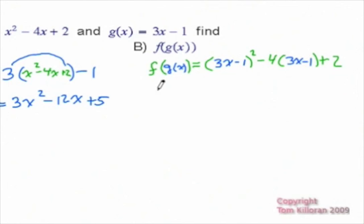And then just simplify. So we have here f of g of x is equal to 9x squared minus 6x plus 1 minus 12x plus 4 plus 2 would be plus 6.